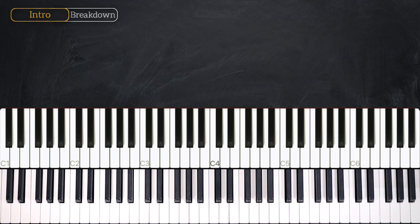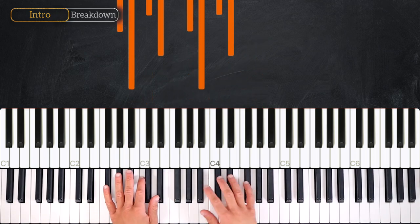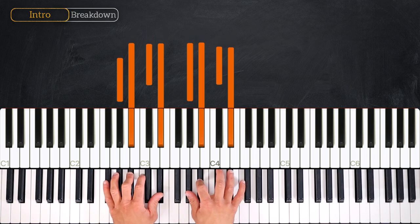Alright guys, so in this first part we are going to learn the introduction. We are in the key of Ab major, so we have four flats: Bb, Eb, Ab and Db.